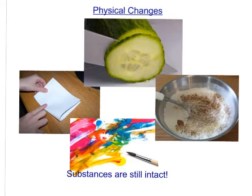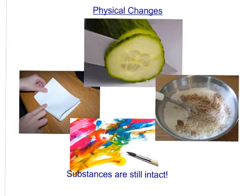Here are some more examples of physical changes. Here is a cucumber undergoing a physical change — its shape is changed, but the cucumber itself is still intact. Here we have paper being folded — the paper is still intact, just changing its shape. Here the paper is being painted on, but the paper itself is still intact. Here we have some different ingredients being mixed together — the ingredients are still intact and have not changed, so it is a physical change.